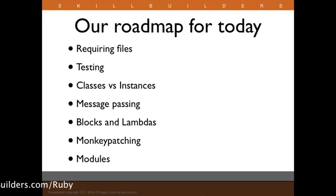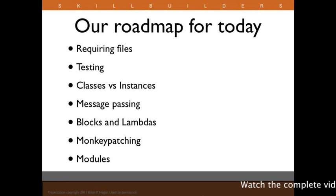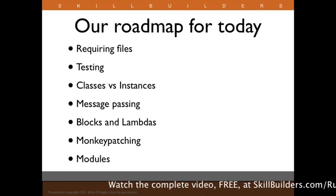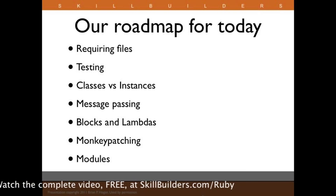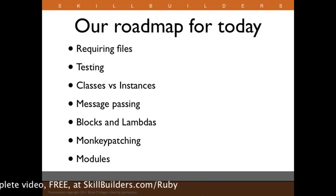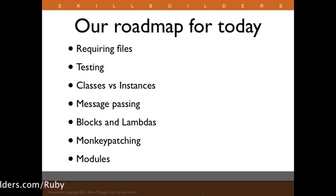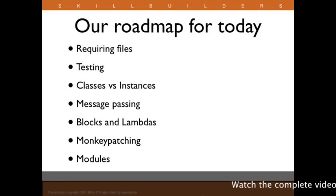Our roadmap for today is to talk about how we can put all of these things together to write code that we can modularize and extend. We'll start with how we require files in Ruby, which is sometimes a lot more than just adding libraries into a namespace. We'll talk about how testing is built in, how Ruby makes a distinction between classes and instances, message passing, blocks and lambdas, monkey patching, and modules. There'll be a small code demo at the end, and I'm always encouraging you to ask questions as we go.